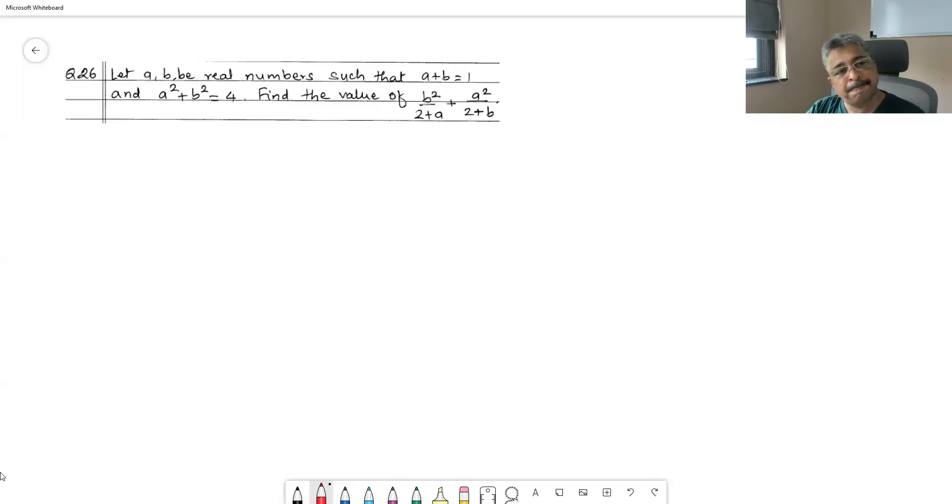In question 26, two equations with two unknowns are given to you: a plus b equals 1, and a squared plus b squared equals 4.